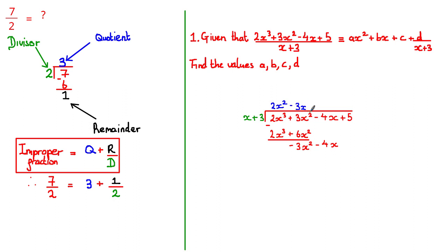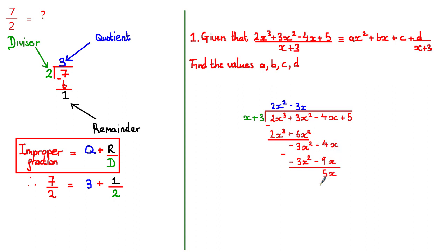Moving on, we bring down −4x. We need a term that multiplies with x to give −3x² — that term is −3x. Multiplying −3x across: −3x times x = −3x², and −3x times 3 = −9x. Always make sure you include the minus sign when dealing with negative terms. Subtracting: −3x² − (−3x²) = 0, and −4x − (−9x) = −4x + 9x = 5x.